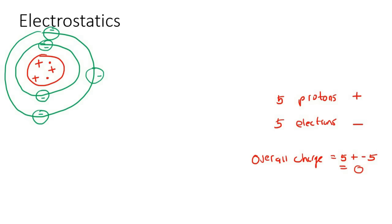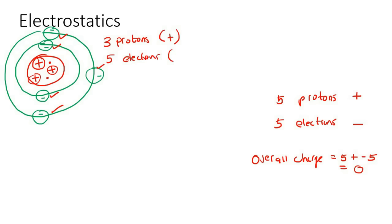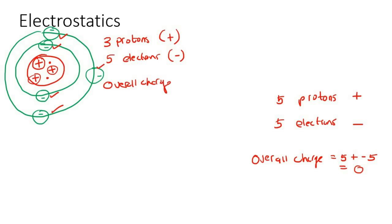So if you look at this atom, it's got three protons - remember protons are positive - and five electrons, which are negative. Can you see that it has more negatives than positives? So the overall charge should be negative. We go: three positives plus five negatives gives us negative two.